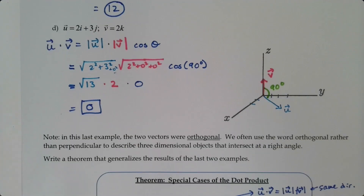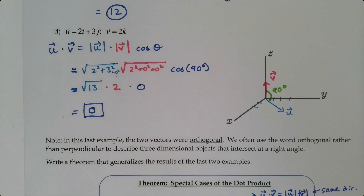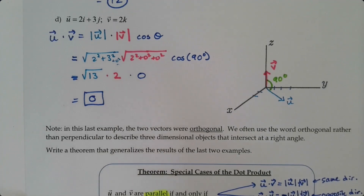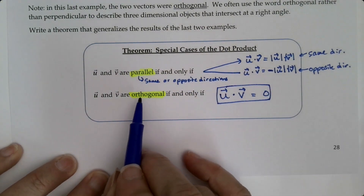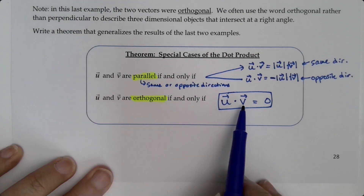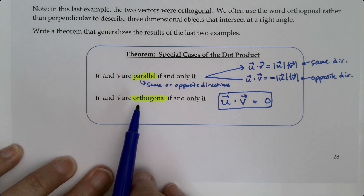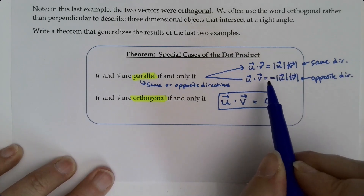That gives us our other special case: if the vectors are orthogonal, then the dot product u · v equals 0. And this is an 'if and only if' relationship — if they're orthogonal, the dot product is 0, and if the dot product is 0, they must be orthogonal. The same logic applies above for parallel and opposite-direction vectors.